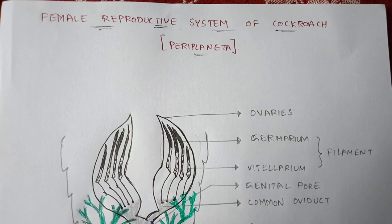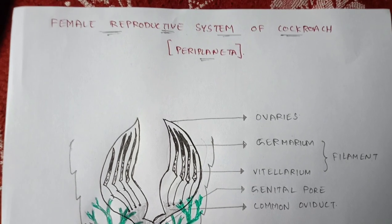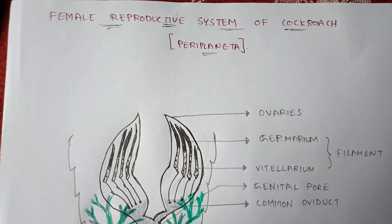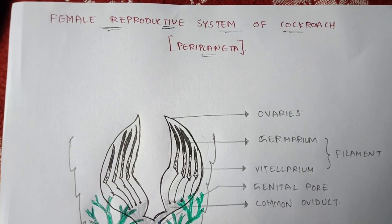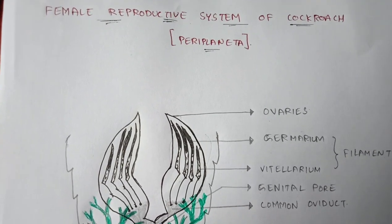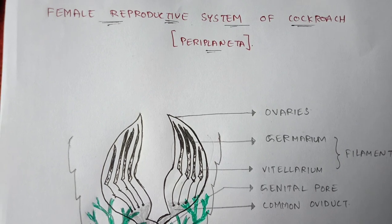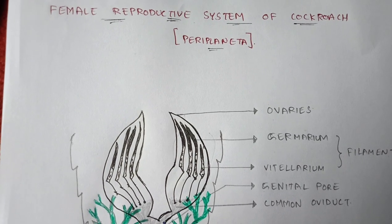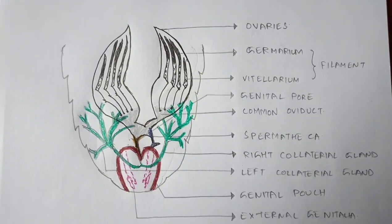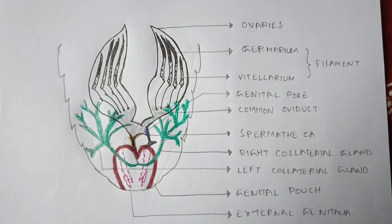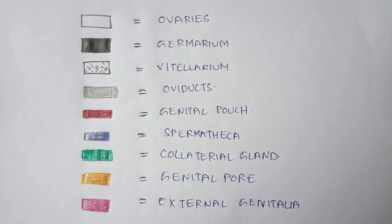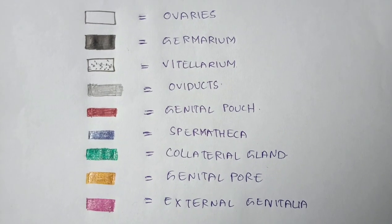In this video, let us discuss the female reproductive system of cockroach. In the previous video I explained the male reproductive system of cockroach, and the link will be given in the description box. The scientific name of the cockroach is Periplaneta americana. This is the diagram of the female reproductive system, represented with colors.